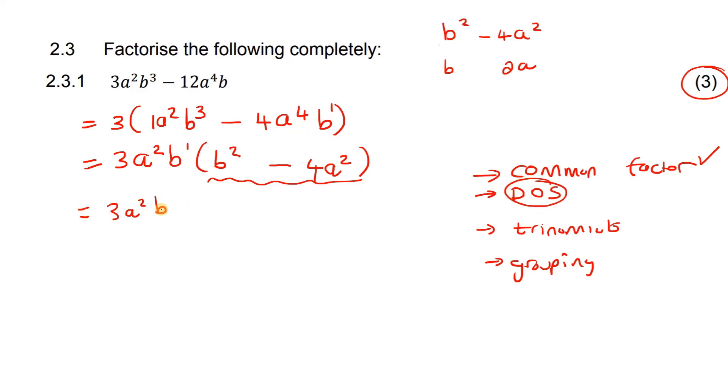We say 3a²b. Then we open up two brackets, because remember, that's what we do with difference of squares. And then we put the perfect squares: b and two a, b and two a, and then you put a plus in one of them and a minus in the other. It doesn't matter which one's a plus and which one's a minus, as long as you have that.